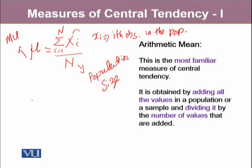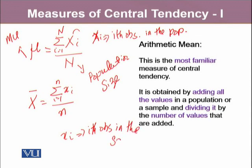Similarly, since we already know that we cannot study the population all the time, therefore we rely on the sample results. When we calculate the sample mean, we represent it by x̄ (x-bar). x̄ equals sum of all the observations in the sample. This xi represents sample observations, where capital X represents the variable and small xi represents the i-th observation in the sample, divided by N, which denotes sample size.